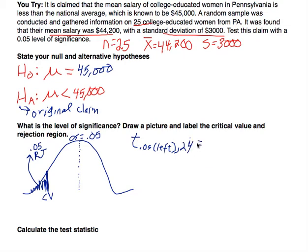Using the t-chart at the back of the book, the area in one tail is 0.05, and we go down to degrees of freedom 24. I got 1.711. This is the critical value that separates — it's 1.711. Now keep in mind: since this is to the left of the mean, it's going to be negative. The critical value is negative 1.711.